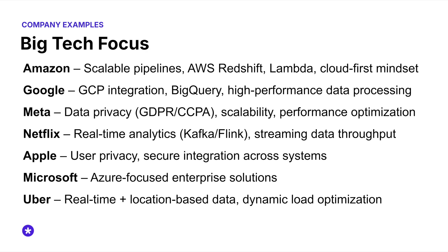Google places a big emphasis on high-performance data processing, very large data sets, and integration with GCP services like BigQuery, Dataflow, and PubSub. Meta wants to hear about data privacy, GDPR compliance, scalability, and performance. Netflix emphasizes real-time data analytics and data processing streaming, services like Kafka and Flink, and optimization for high throughput. Apple is focused on privacy, integrating across diverse systems, and secure user data management.